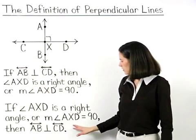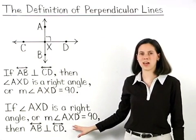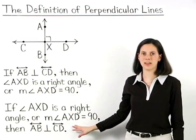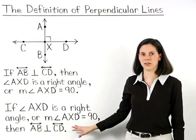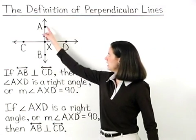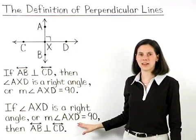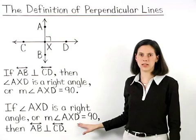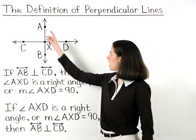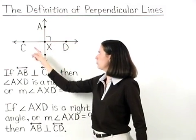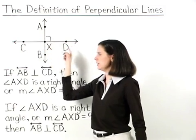Finally, the definition of perpendicular lines can also be stated the other way around. If angle AXD is a right angle, or the measure of angle AXD is 90 degrees, then we know that line AB is perpendicular to line CD.